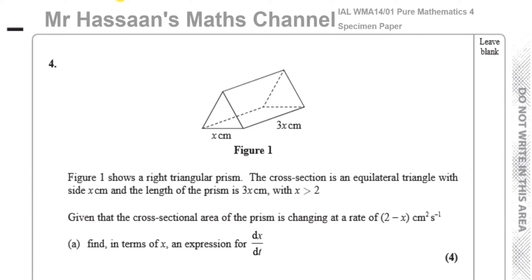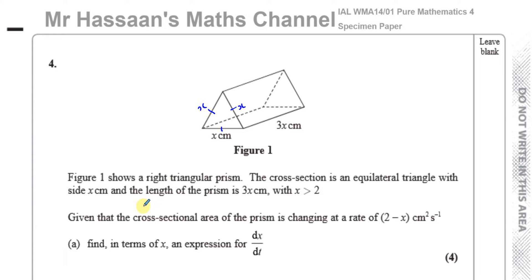Welcome back. This is Mr. Hassan's Maths Channel and we are now on question number 4 from the International A-Level LXL Pure Mathematics P4 Specimen Paper. This question, number 4, is about a right triangular prism whose cross-section is an equilateral triangle with side x — so all sides are equal. The length of the prism is 3x centimeters, where x is greater than 2.